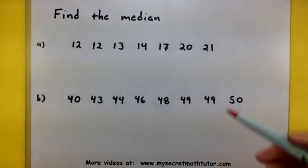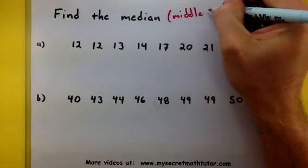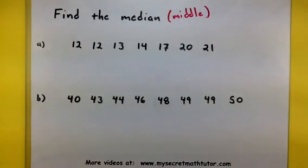Now what the median is, is it's basically the middle of our data. Now two situations may occur and that's why I have two examples, so let's go through the first one.